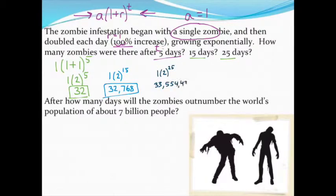So, here are my two models and my two answers. Notice all I did was change the exponent and everything else remain the same. So, 15 days ended up with about 32,000 zombies. And after 25 days, I'm over 33 million zombies. So, once again, we see that idea of exponential growth starting out really slow but then continuing to increase very, very quickly as time goes on.